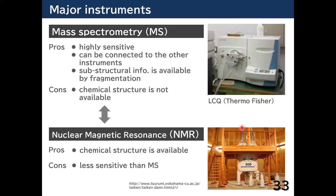To detect chemicals with such a huge number and wide diversity, mass spectrometry is often used in metabolomics. MS can measure the molecular weight, which is a common feature of all chemicals, and MS is applicable for high-throughput analysis due to its high sensitivity. Nuclear magnetic resonance (NMR) is also used and is advantageous for determining chemical structure. These two instruments are used complementarily. Today I'll focus on MS-based metabolomics.